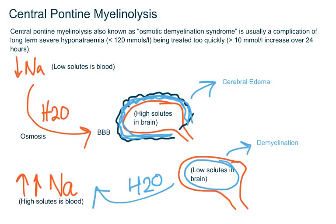It is essential to correct sodium slowly to prevent central pontine myelinolysis. Aim for an increase in sodium levels of up to 6 to 8 millimoles per litre in 24 hours. Central pontine myelinolysis, also known as osmotic demyelination syndrome, is usually a complication of long-term severe hyponatremia being treated too quickly, i.e. more than 10 millimoles per litre increase over 24 hours.